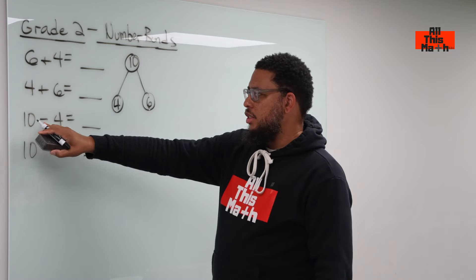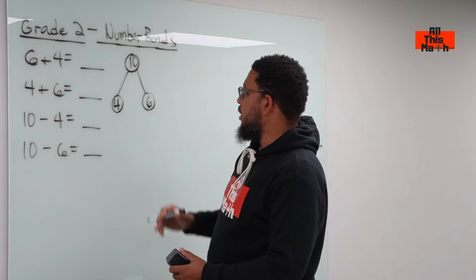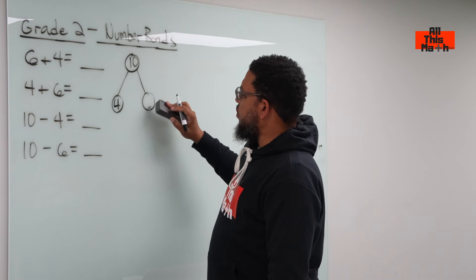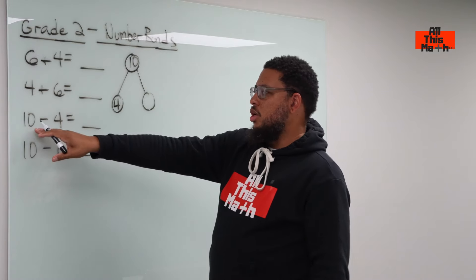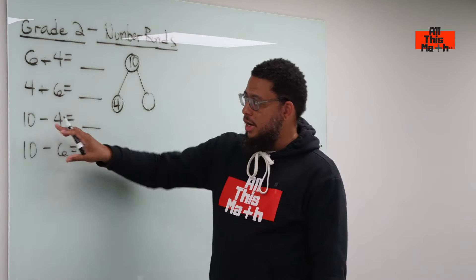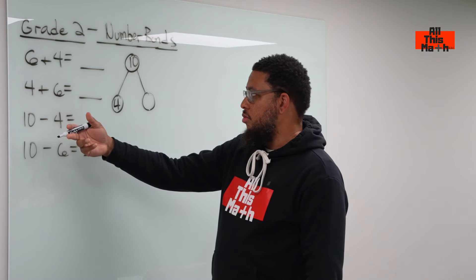Now, if we're switching to subtraction, now we have ten minus four and ten minus six. The ten is still the largest number. So we also want to do this because it shows the relationship between addition and subtraction, and how addition and subtraction are just opposite operations.